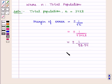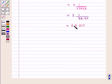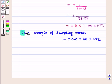And this is equal to plus minus of 0.017, or we can also denote this as plus minus of 1.7%. Thus we say that margin of sampling error is given by plus minus of 0.017 or plus minus of 1.7%.